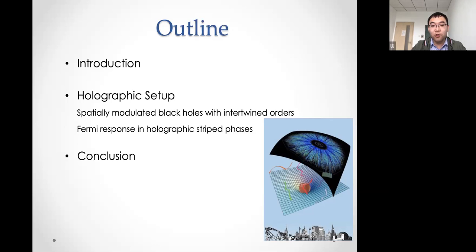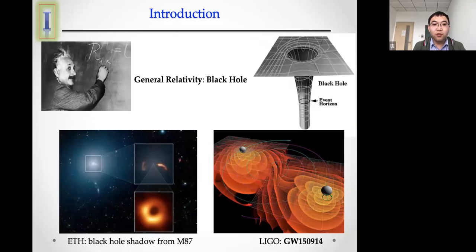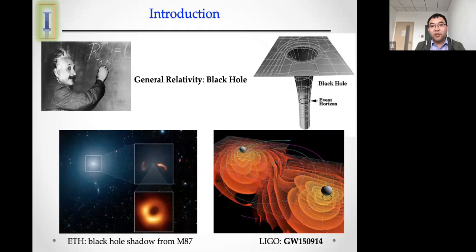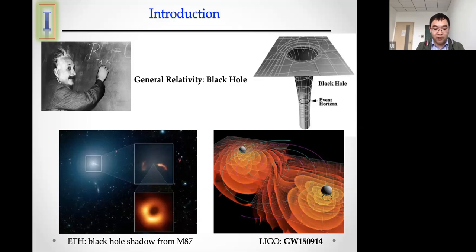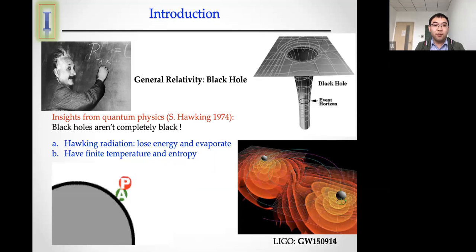Black holes should be the most exotic objects predicted by general relativity. Their gravity is so strong that even light cannot escape, so they look quite dark. They have a boundary called the event horizon. With the progress of science and technology we're now able to see pictures of black holes from the Event Horizon Telescope and to hear gravitational waves from two black holes merging from the LIGO collaboration. This confirms that black holes are indeed real objects in our universe.